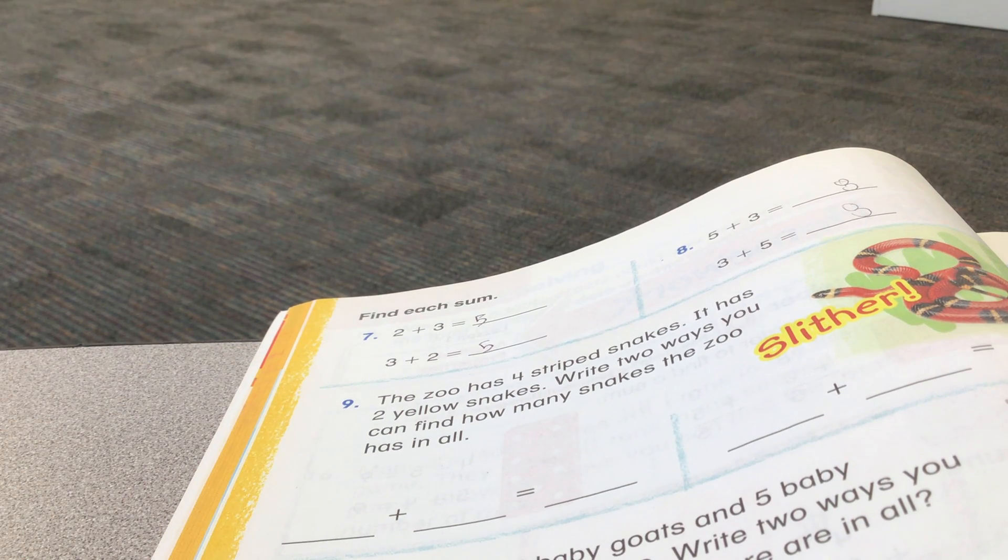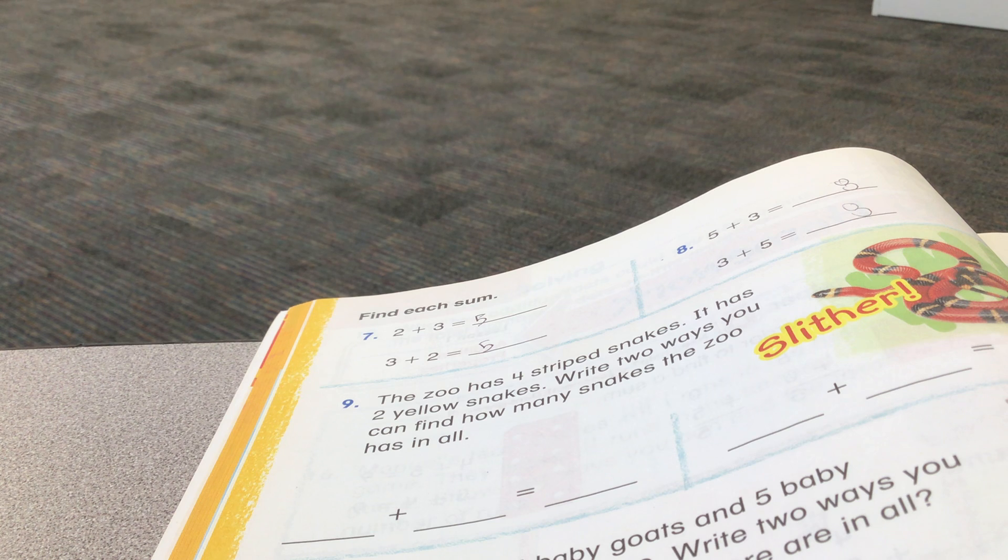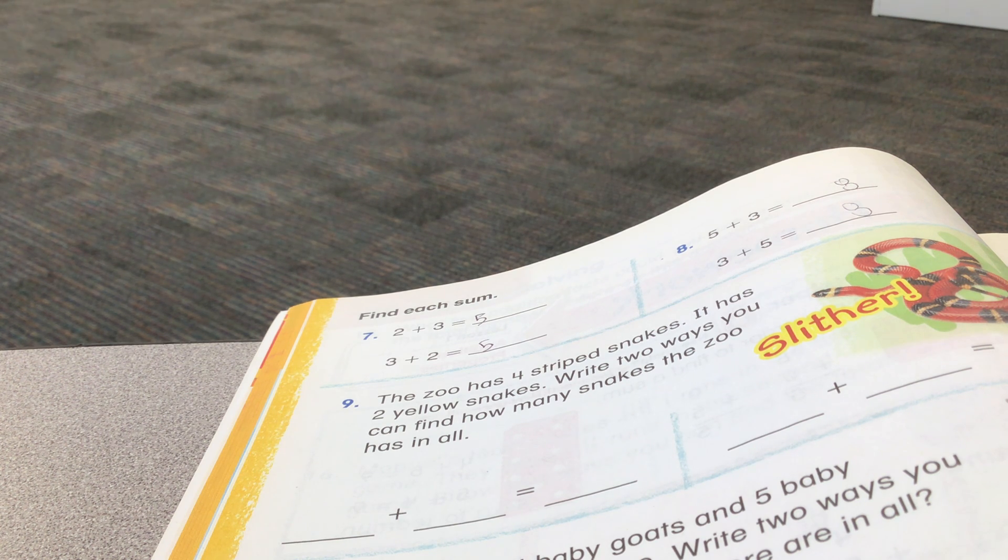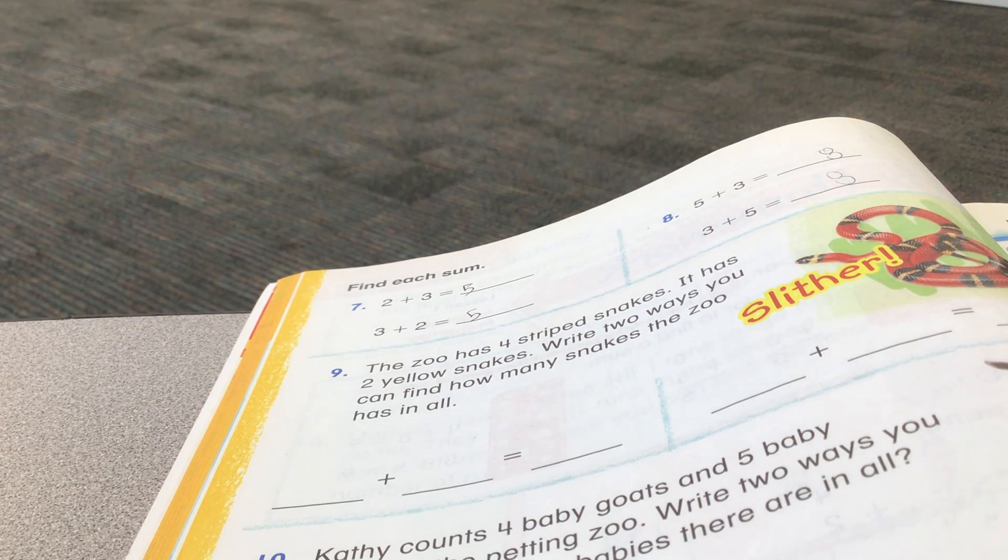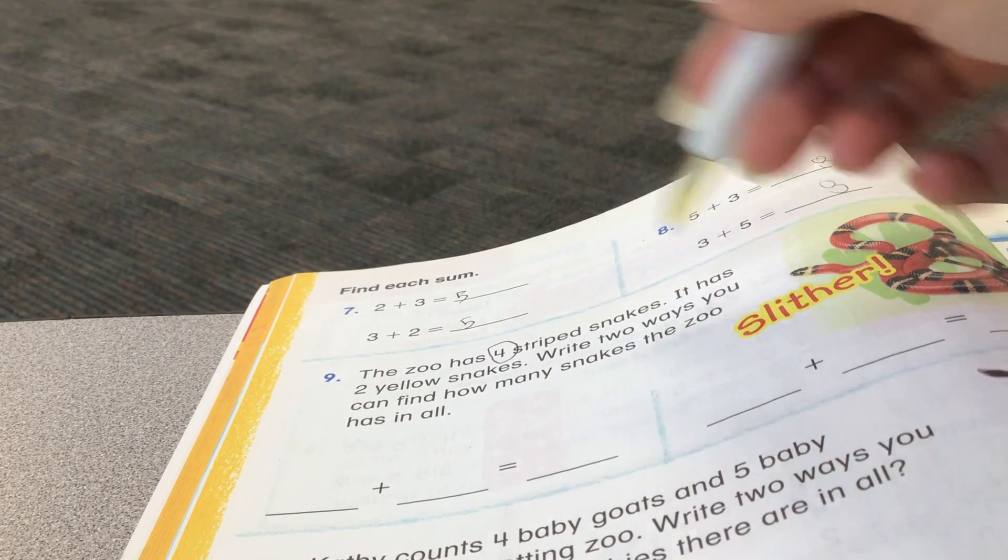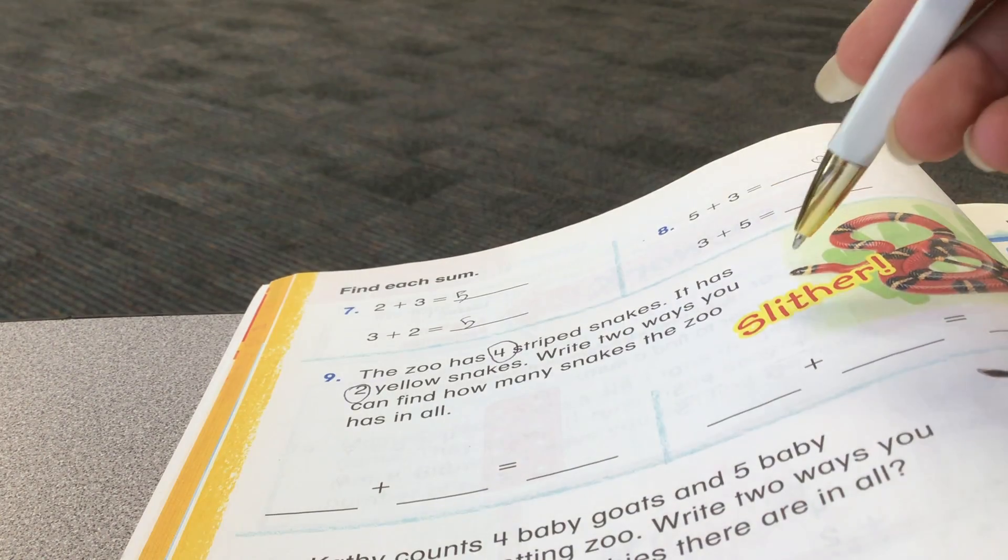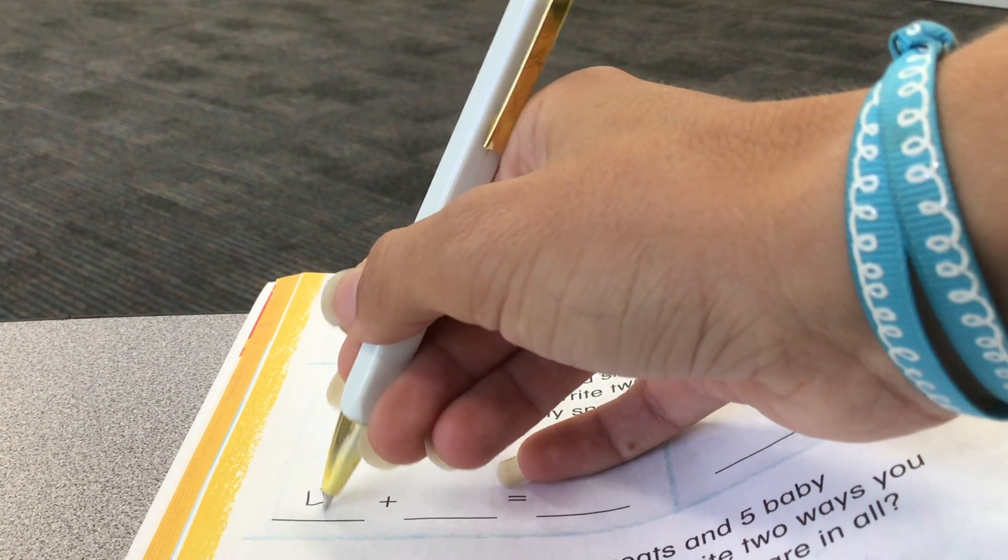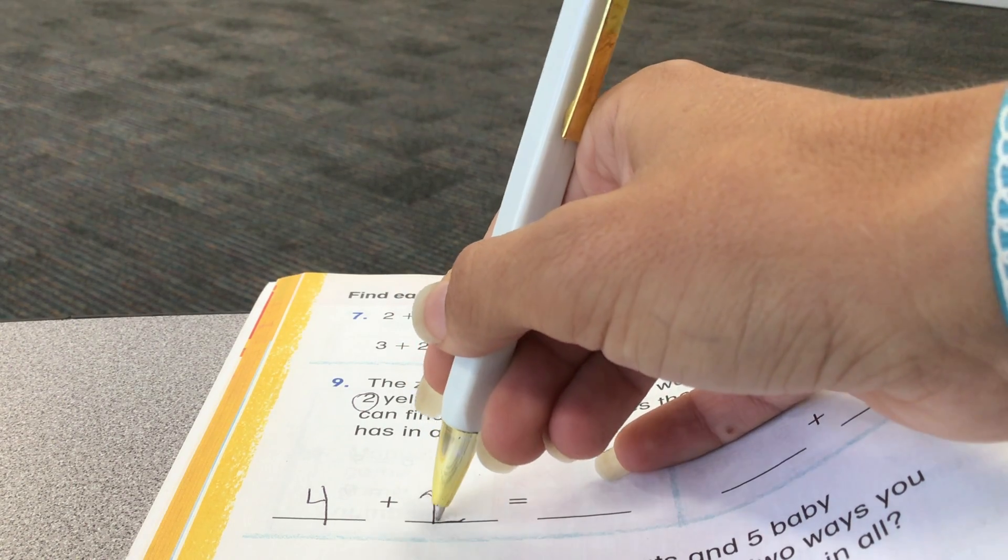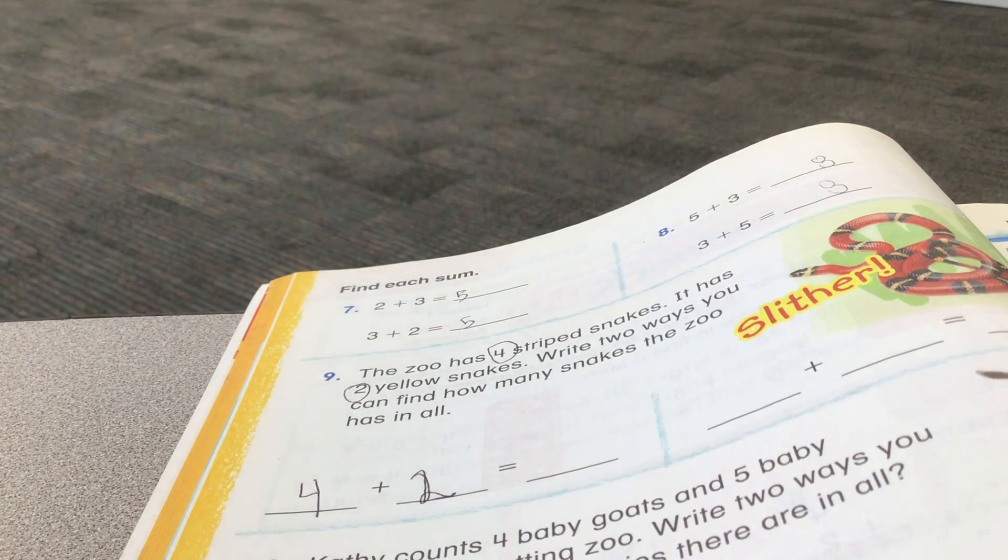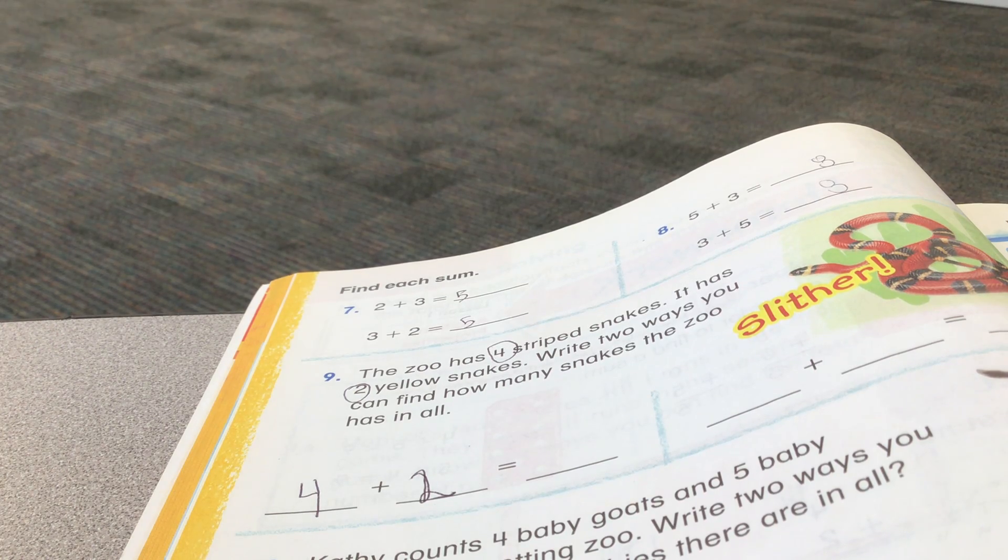The zoo has 4 striped snakes. It has 2 yellow snakes. Write 2 ways you could find how many snakes the zoo has in all. So, we know it has 4 striped snakes. We're going to circle that 4. And we know it has 2 yellow snakes. So, 4 striped snakes and 2 yellow snakes.